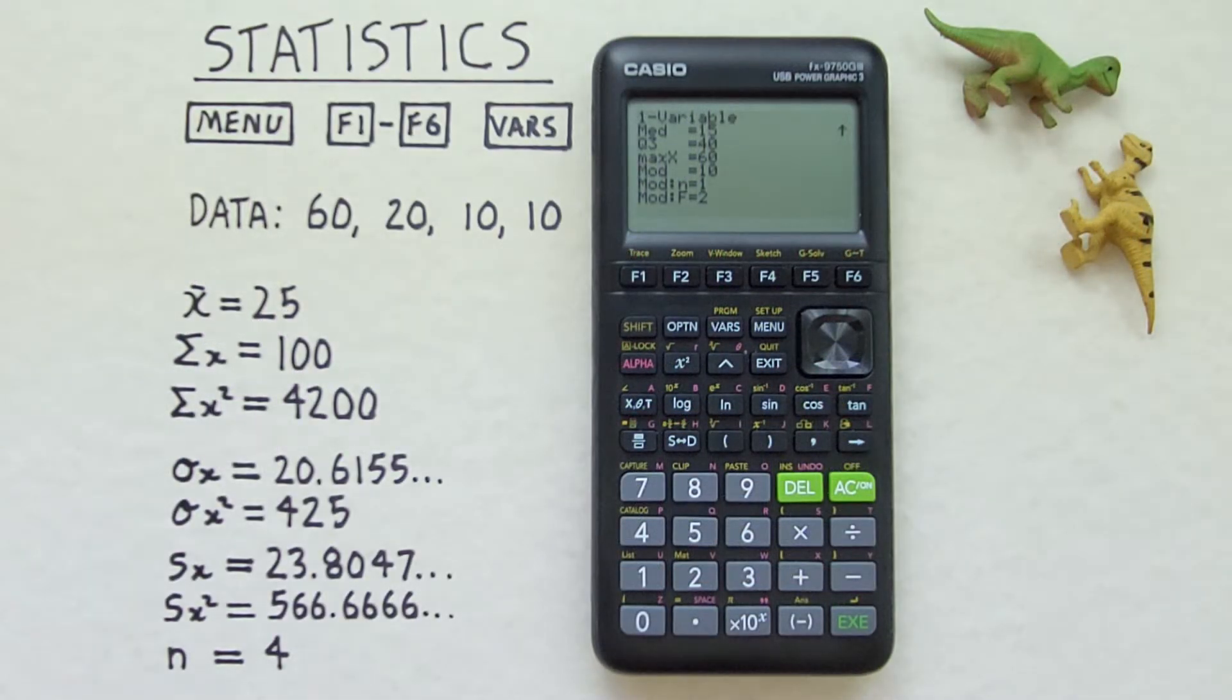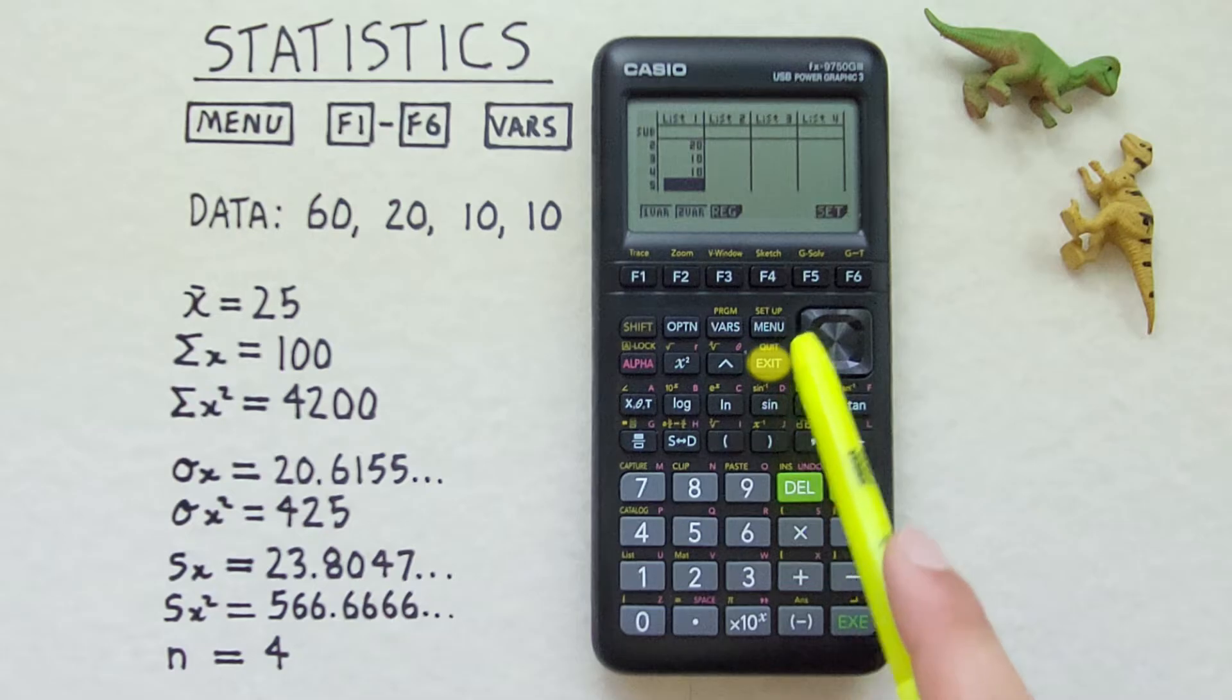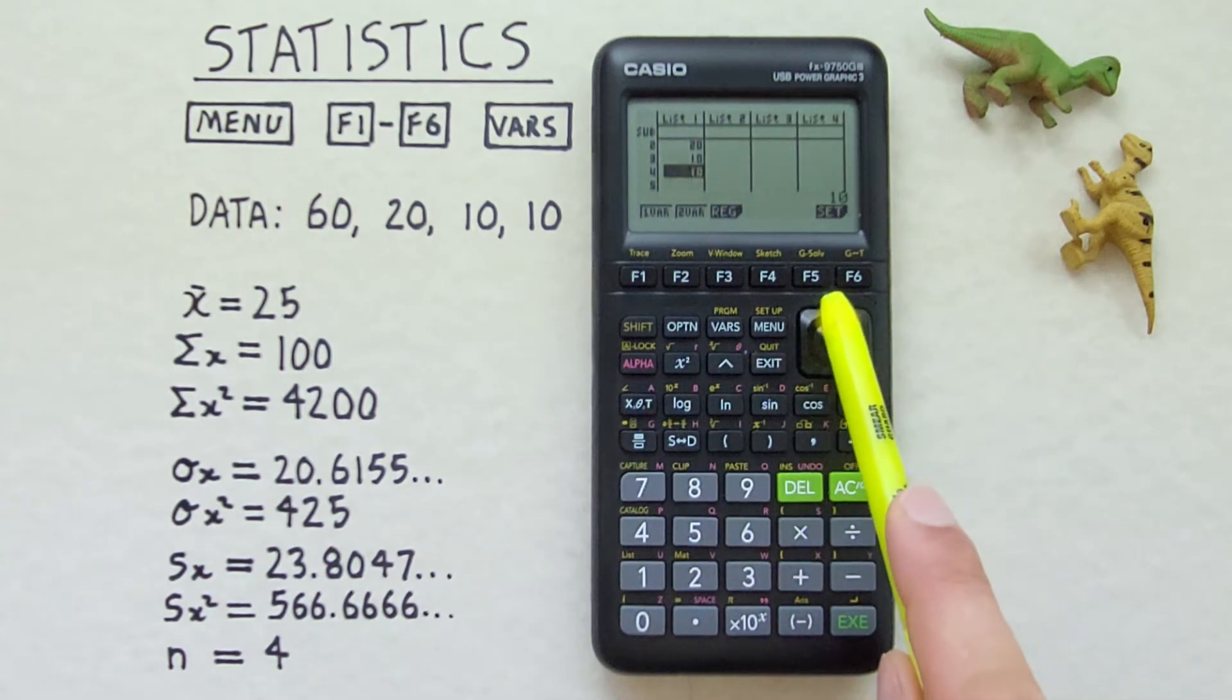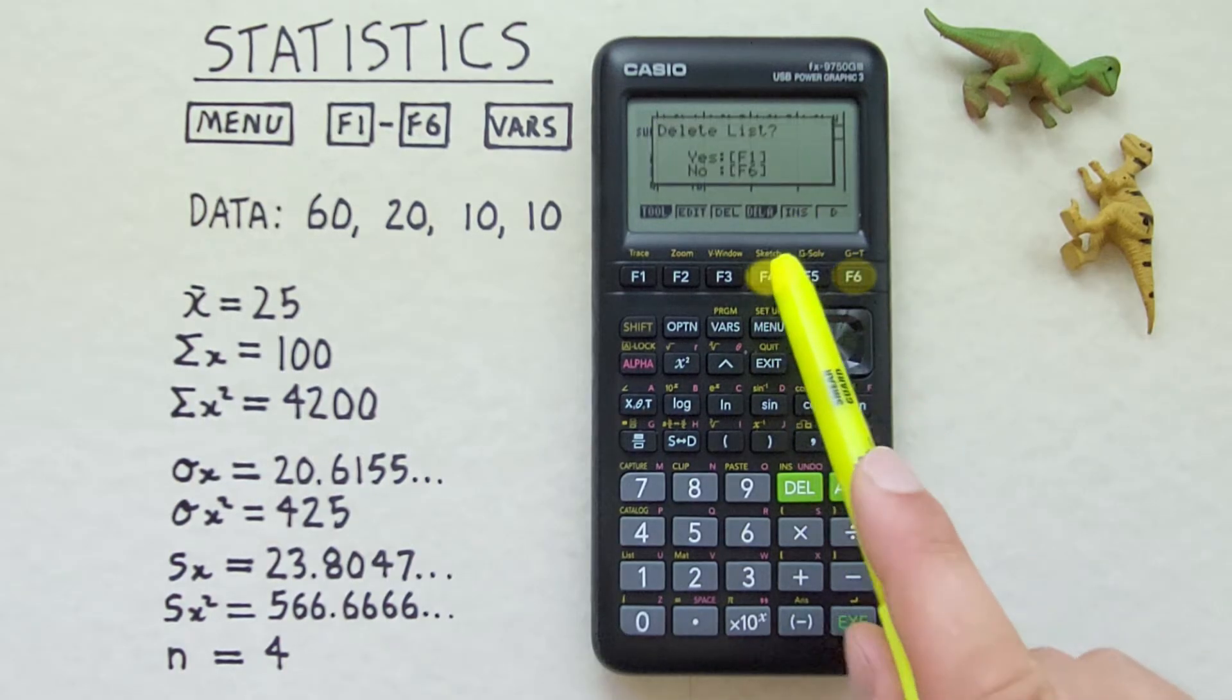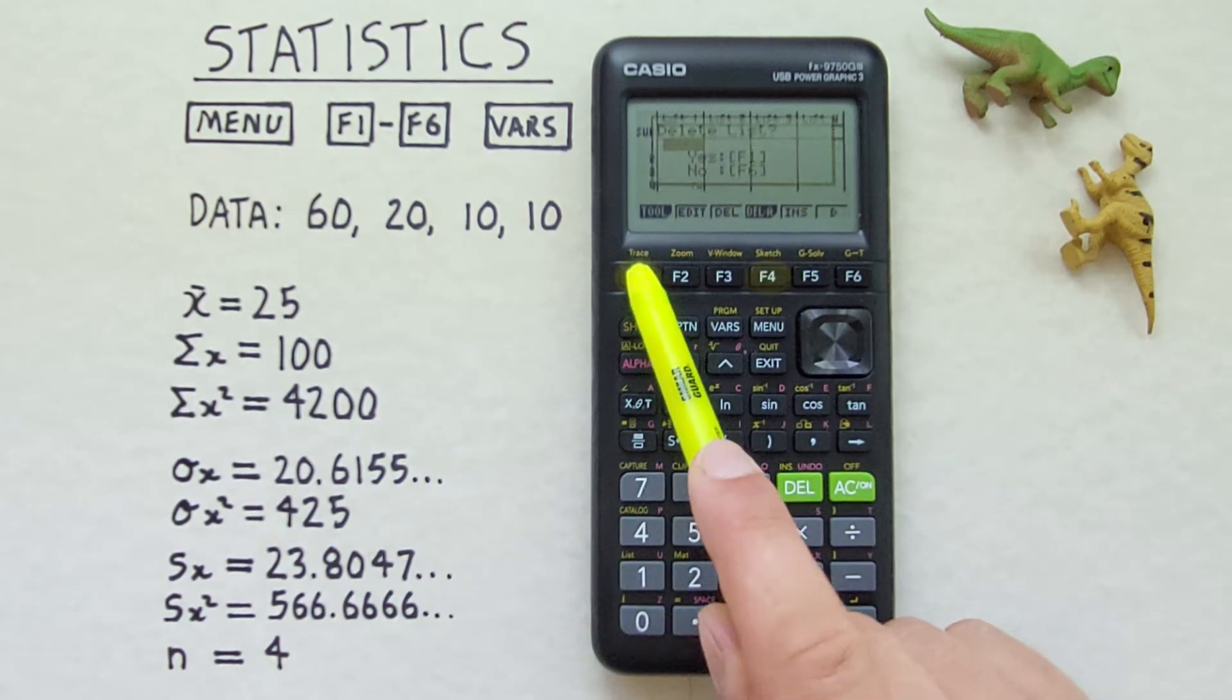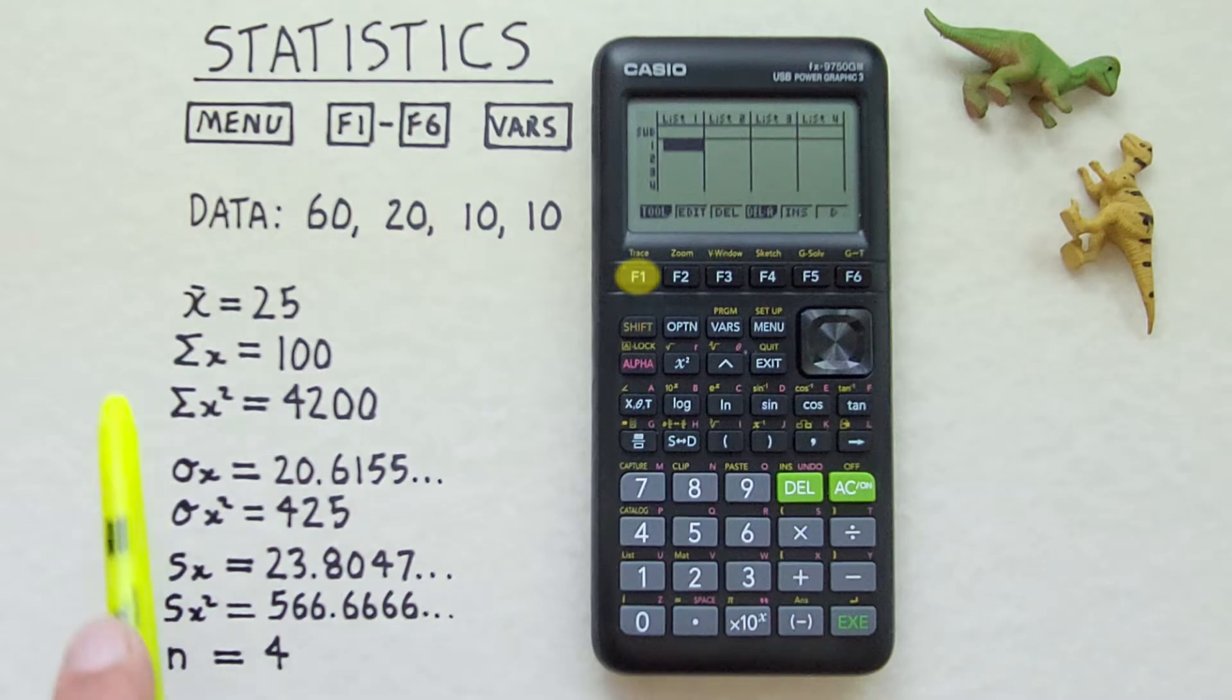So that covers our basic stats but what if we have a lot of repeating variables like say we have these two tens here and want to enter that all at once in our data set. Well if we press exit and go back to our data set here and if we clear our data set so we can start over.